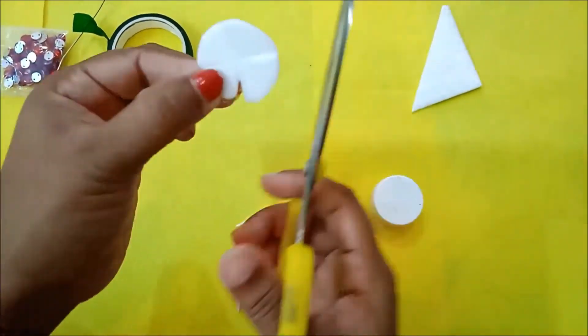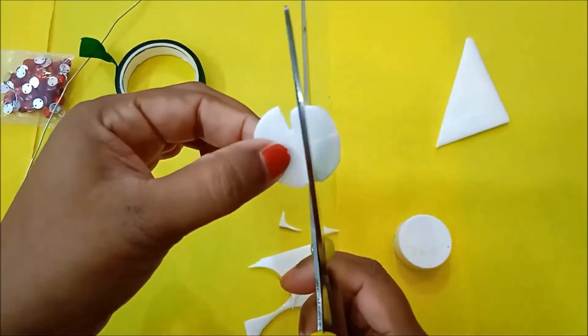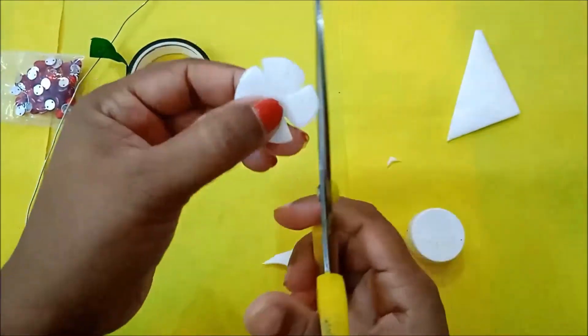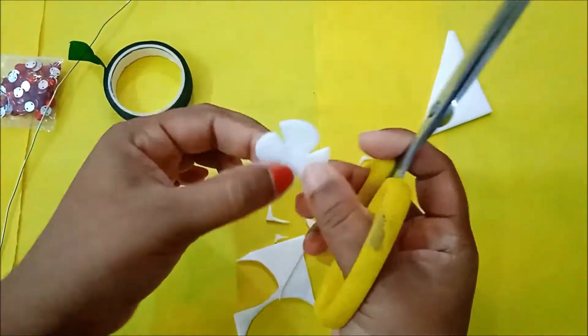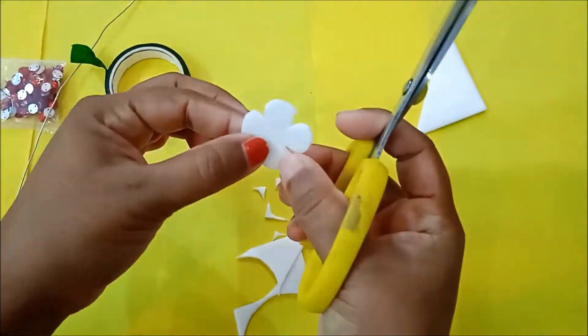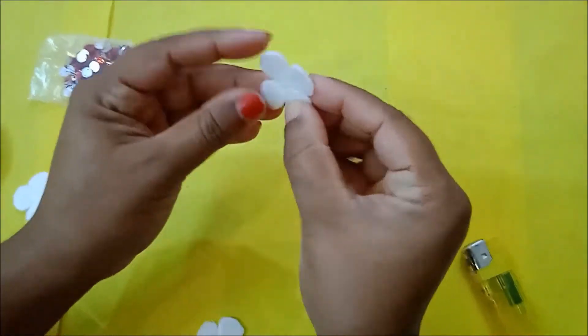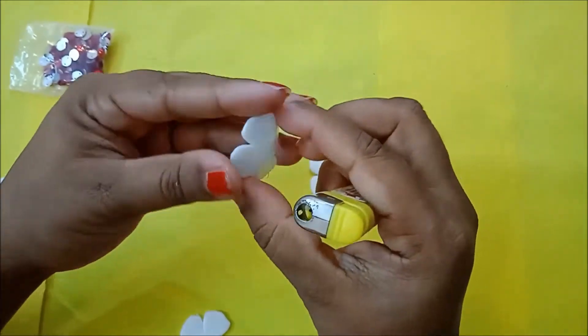We need a four-petal flower. Now remove the edges to form the shape of petals. Take the lighter and heat it at the bottom by holding like this. Be careful while doing this because it may burn easily.